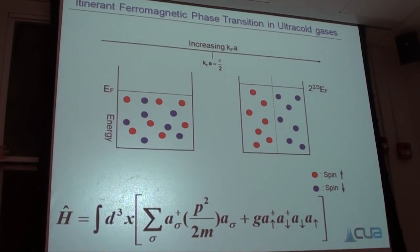What I'm suggesting here, and this is the essence of itinerant ferromagnetism, ferromagnetism of conduction electrons or of delocalized fermions, is the following: it's always possible for the system to avoid repulsive interactions, but then the system has to pay a price in terms of kinetic energy or correlation energy.